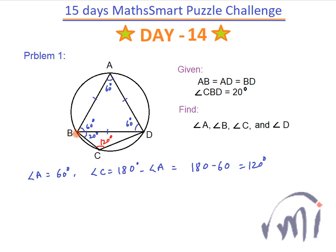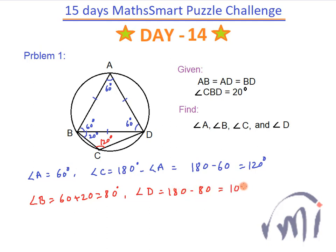Angle B is equal to 60 plus 20 plus 20, that is 80 degrees. That means angle D will be equal to 180 minus 80, that is 100 degrees. So we have found the values of angle A, angle B, angle C which is 120, and angle D which is 100 degrees.